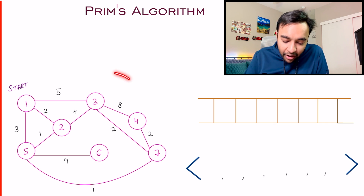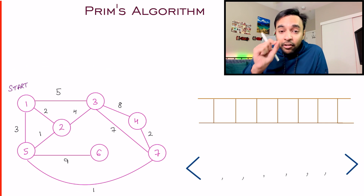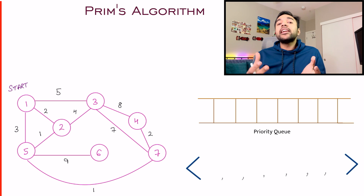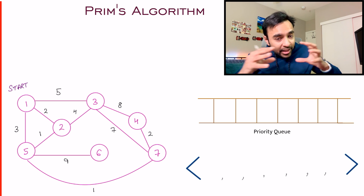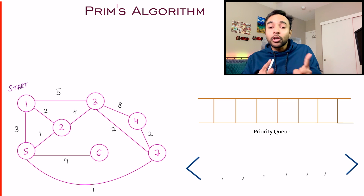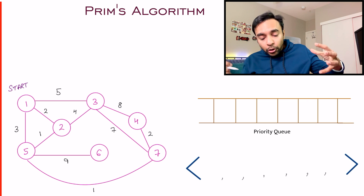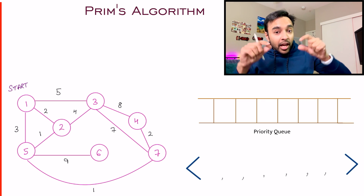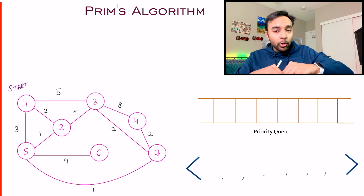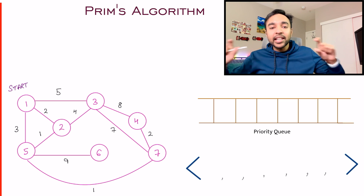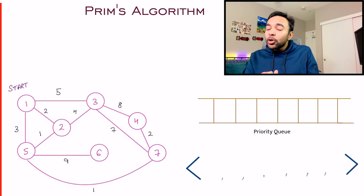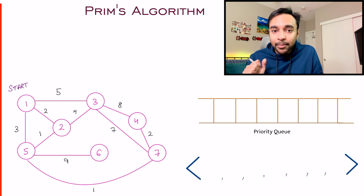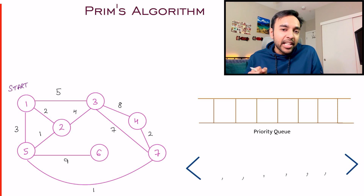Let us say I have this sample graph in front of me. For Prim's algorithm, we take the help of a priority queue. What a priority queue does is keep all elements sorted in ascending order. It behaves like a queue — first in, first out — but if you are inserting elements into it, they will keep getting sorted automatically. So you always know that when you are popping out an element from the queue, that is the smallest element.